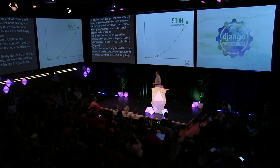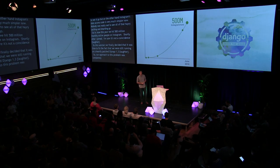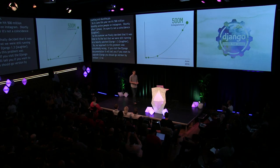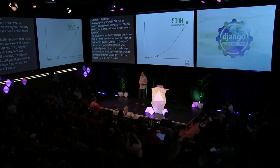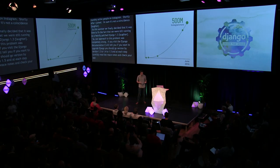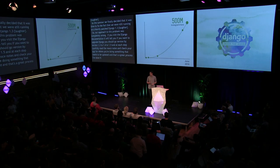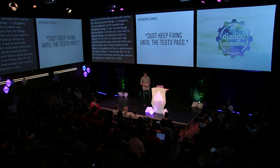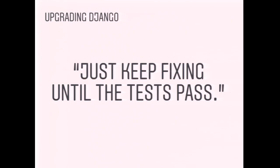Our approach to this problem was completely wrong. The Django documentation tells you to go version by version — 1.3 to 1.4 to 1.5 — carefully reading release notes at each step. That's a great process, but if we had done that, I'm not sure we ever would have actually gotten around to the upgrade. So instead, we went straight from 1.3 to 1.8, just installed it, ran the tests, some of them failed, we fixed things — rinse and repeat for several months.